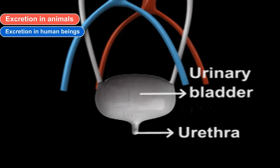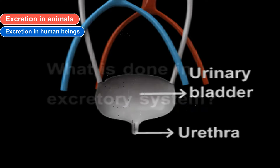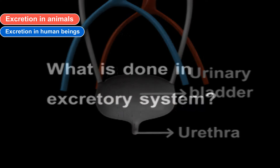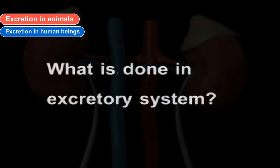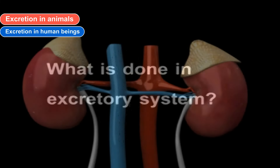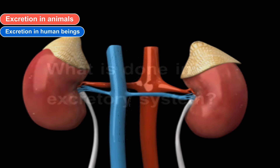Kidneys. Two kidneys are present in human beings. They are bean-shaped and reddish-brown in color. Each kidney has cells called nephrons, which are the functional units of kidneys. The reabsorption of water from the blood takes place in the nephrons.